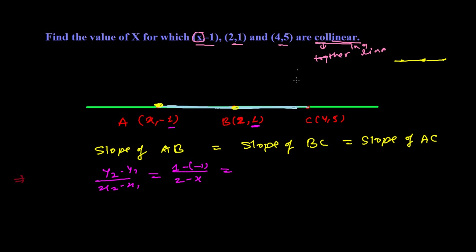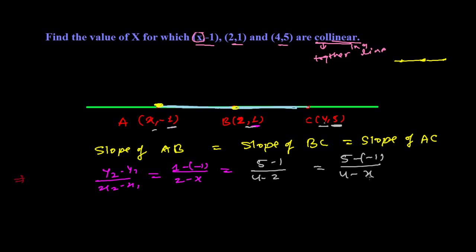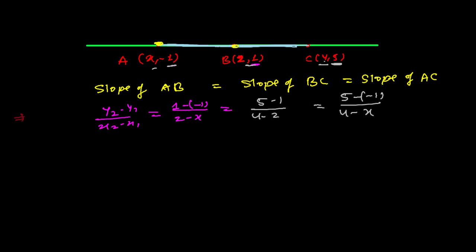Now let's find the slope of BC: (5 - 1) / (4 - 2) = 4 / 2. And the slope of AC: (5 - (-1)) / (4 - x) = 6 / (4 - x). We now have all three slopes expressed.